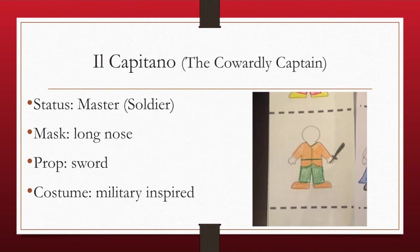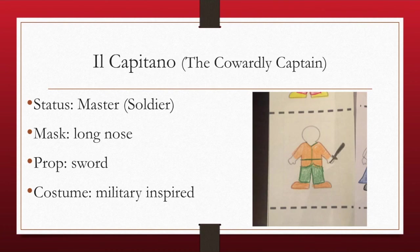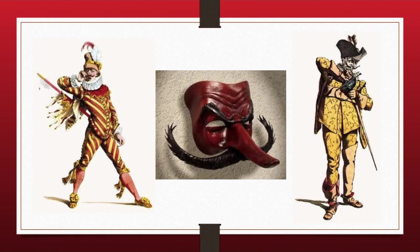The next master is Capitano, also known as the cowardly captain. He was a master, usually dressed as a soldier or posing as a former soldier. His mask has a long nose, his main prop was a sword, and his costume was either military or military-inspired. Even though he seems like a soldier, he was all bravado — he'd say things like 'I'll fight you, I'm so tough, I killed all these people!' But when actually confronted with a fight, he would scream and run away.